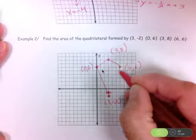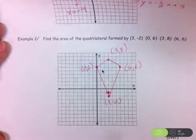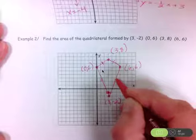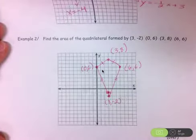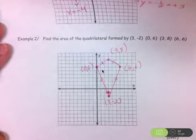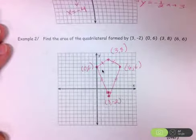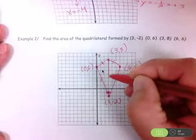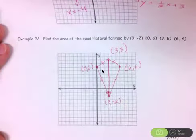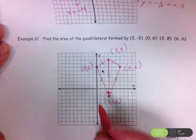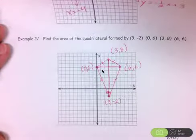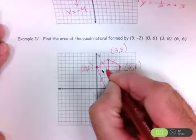Sometimes the easiest way to find an area is to break the figure into pieces you already know how to work with. In example one we found the area of a triangle — and we can break this kite up into two triangles using its diagonals. An important property from kites is that the diagonals meet at a right angle.